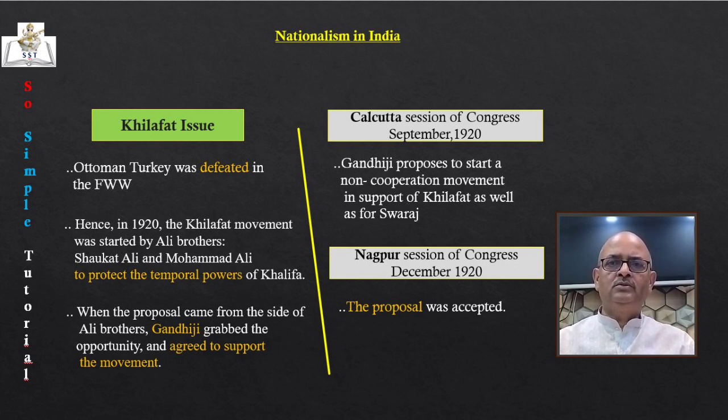The person who led them was Alluri Sitaram Raju. He claimed he had many special powers — he could make correct astrological predictions, heal people and even survive bullet shots. He was inspired by the non-cooperation movement and talked about the greatness of Mahatma Gandhi.